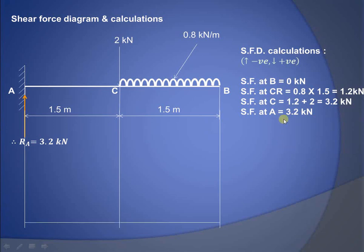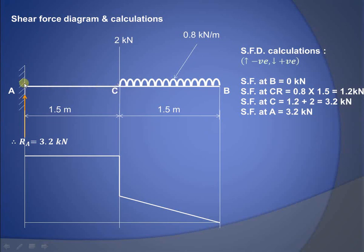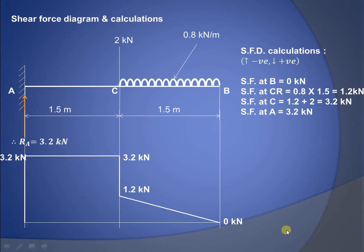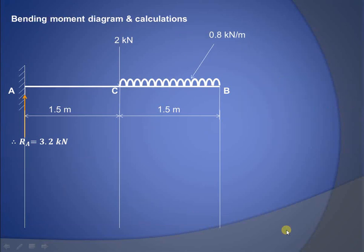Drawing the shear force diagram: at point B it is 0, at C-right it is 1.2 kN, so there is an inclined line from B to C. Then there is a vertical jump of 2 kN due to the point load, making the total 3.2 kN. From C to A there is no additional force, so a horizontal line is drawn, and at point A the shear force is 3.2 kN.